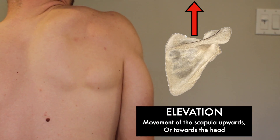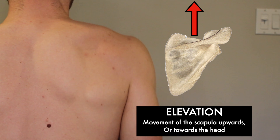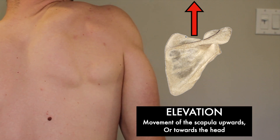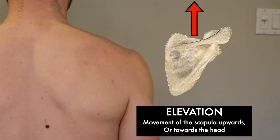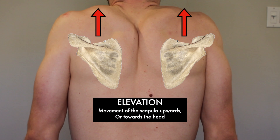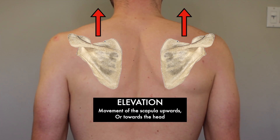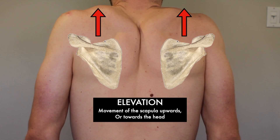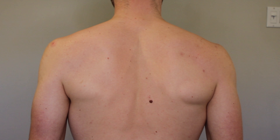Elevation of the scapula happens when the shoulder blade moves up. This is a pretty easy one to understand, because when we elevate, we rise. When you watch someone do a shrugging movement like this, look how the shoulder blade moves upwards.